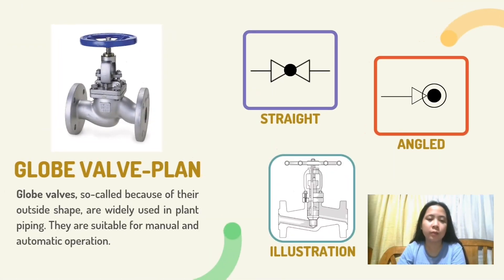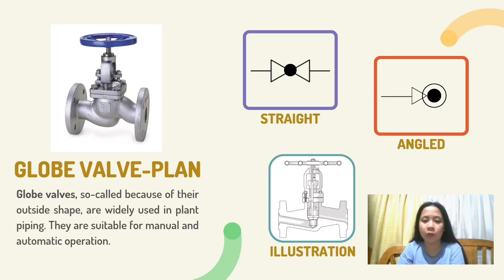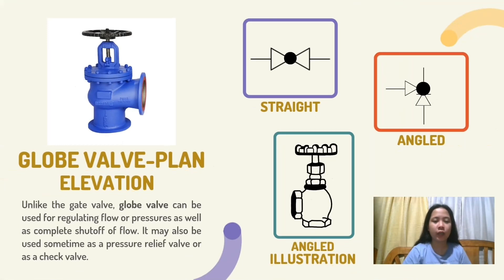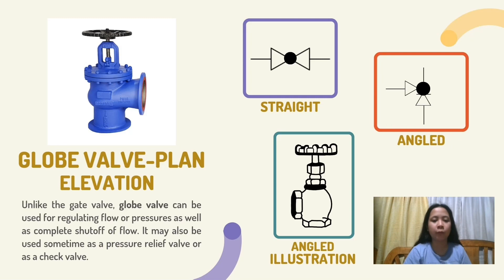Globe valve. Globe valves, so-called because of their outside shape, are widely used in plant piping. They are suitable for manual and automatic operation. Here are the symbols: straight and angled — the illustration of globe valve. Globe valve elevation: unlike the gate valve, a globe valve can be used for regulating flow or pressure as well as complete shut-off. It may also be used as a pressure relief valve or as a check valve. Here are the symbols: straight and angled illustration of globe valve elevation.